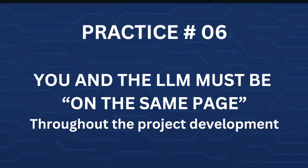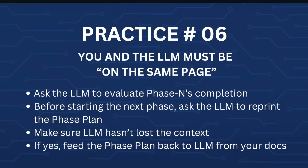Practice number six: you and the LLM must be on the same page. You have to do two major activities here. Number one: ask the LLM to evaluate the phase completion. Number two: before starting the next phase, ask the LLM to reprint the phase plan to make sure it has not lost the context — otherwise it may mess things up. And if it has lost the context, feed the phase plan back to the LLM from your docs.